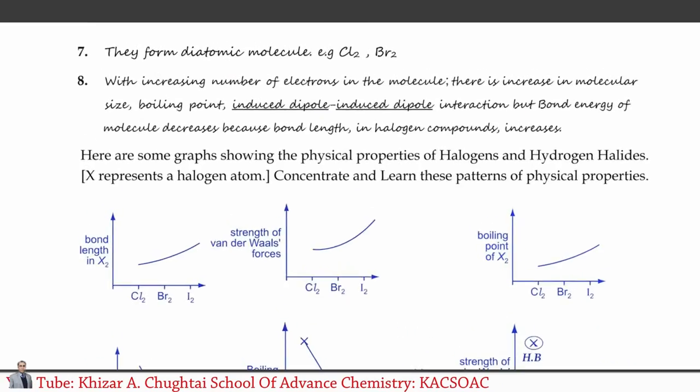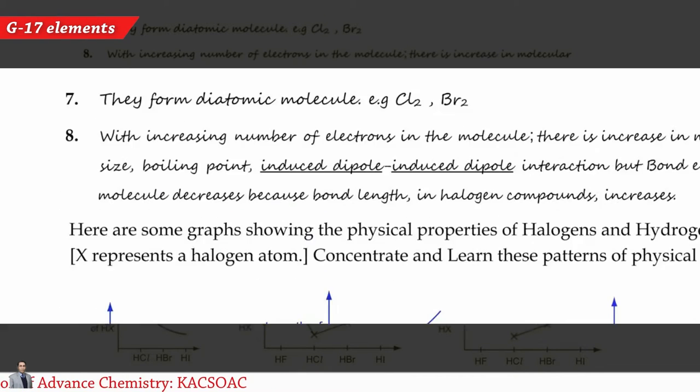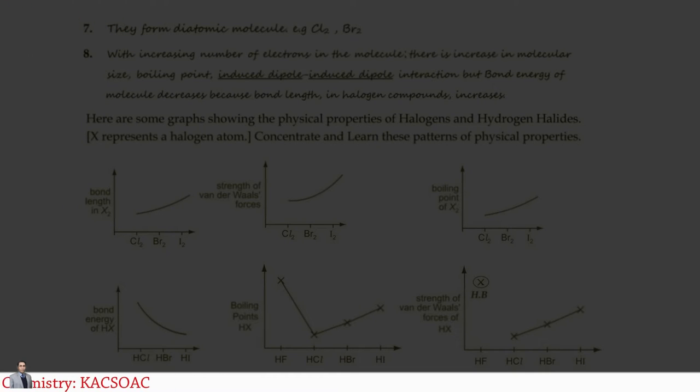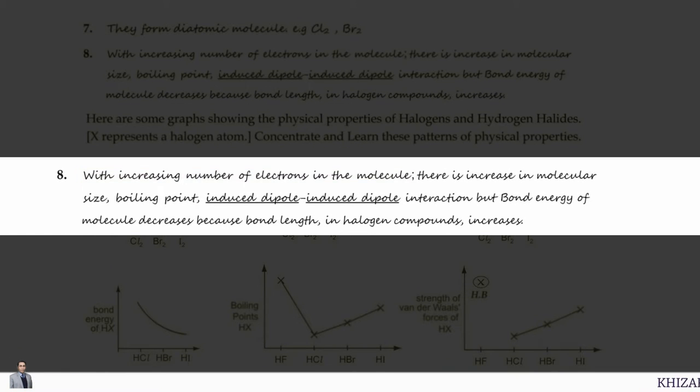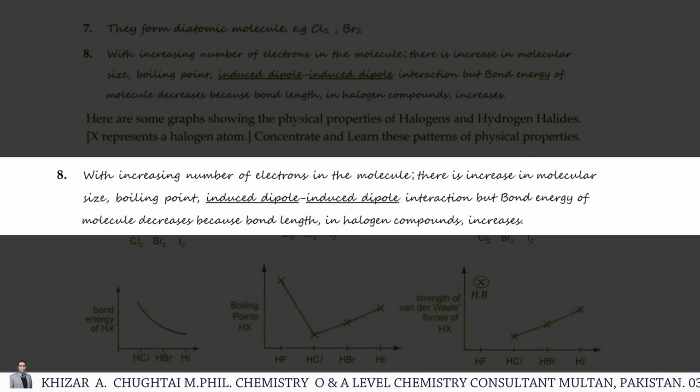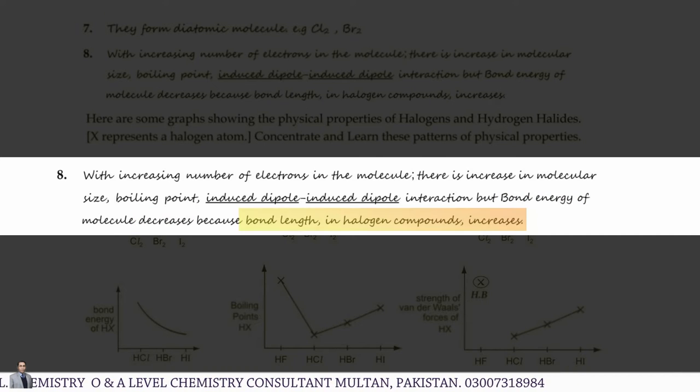Property 6: They form diatomic molecules, for example Cl2 and Br2. With increasing number of electrons in the molecule, there is increase in molecular size, boiling point, and induced dipole-induced dipole forces, but bond energy of the molecule decreases because the bond length increases.